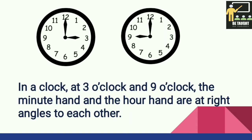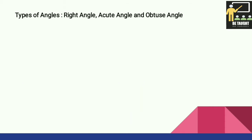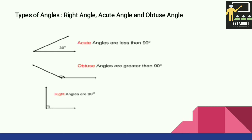In a clock, at three o'clock and nine o'clock, the minute hand and the hour hand are at right angles to each other. Acute angles are less than 90 degrees, obtuse angles are greater than 90 degrees, and right angles are exactly 90 degrees.